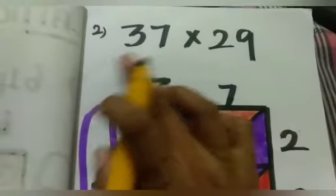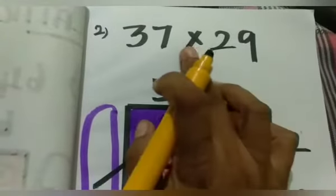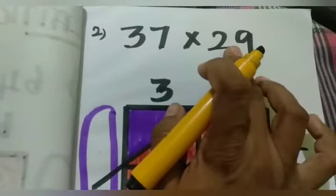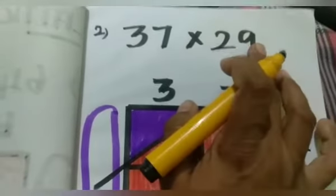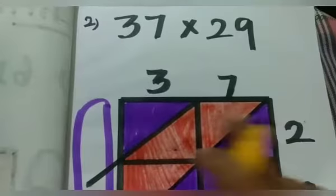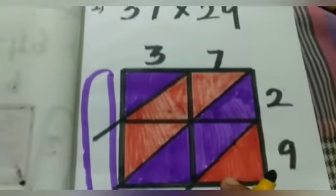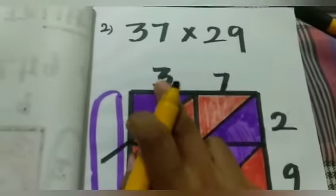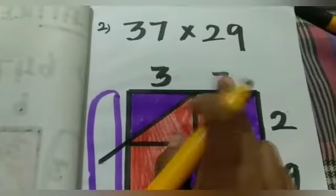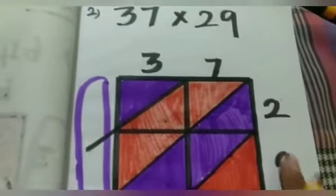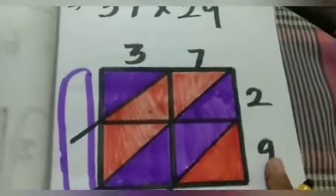Second sum: 37 into 29. 37 is a 2-digit number and 29 is a 2-digit number. So, draw 2 columns and 2 rows. 37 is written on top of the box and 29 is on the side.